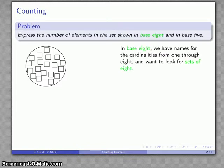So, in base 8, I have names for the cardinalities of 1 through 8. And I'm going to form sets of 8 if I can because those sets of 8 will also serve as units. So, let's take a look at this.